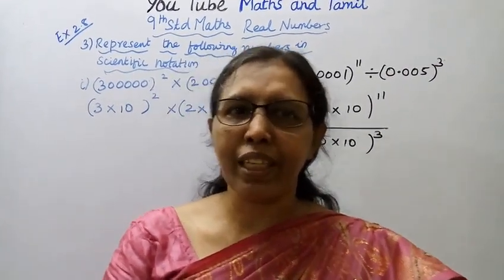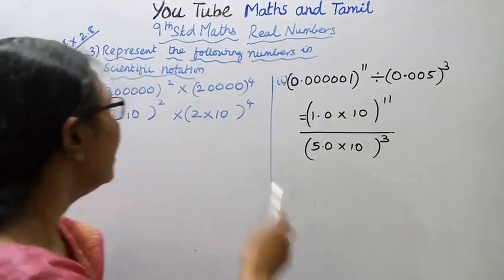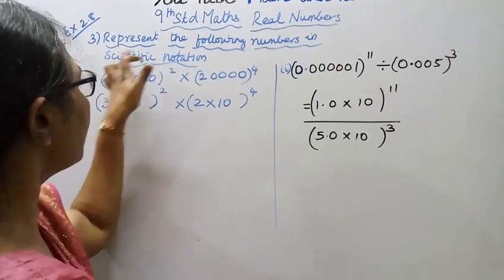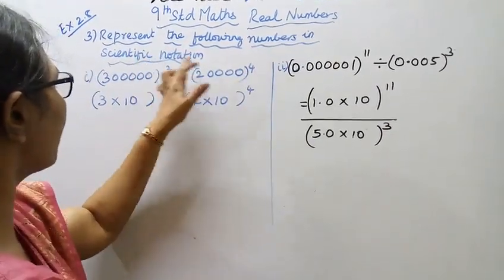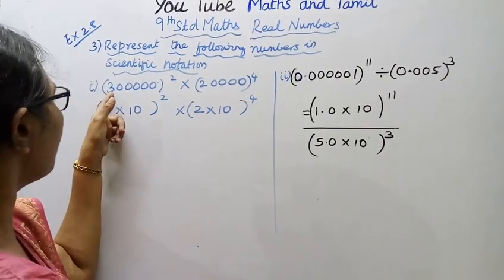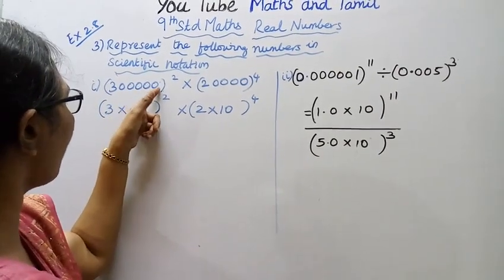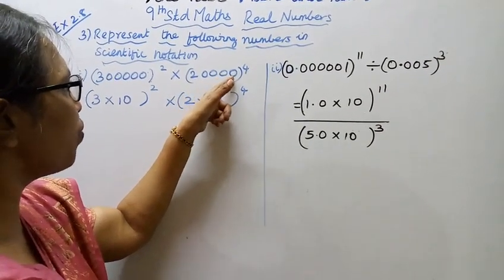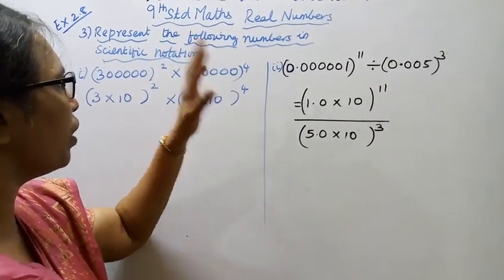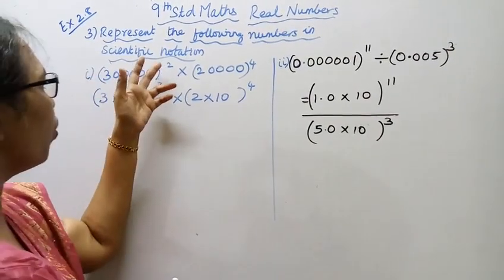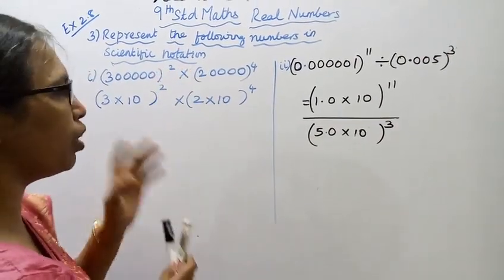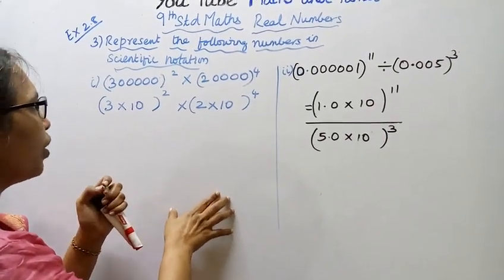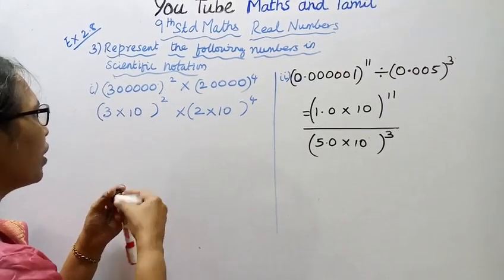Hello students, welcome to Max and Tumble channel. Class 9 standard, Max Real Numbers, Exercise 2.8, third sum: represent the following numbers in scientific notation. First one: 3,42,12,34 with five zeros, the whole square, into two with four zeros, the whole power four. That is, three lakhs whole square into twenty thousand the whole power four.